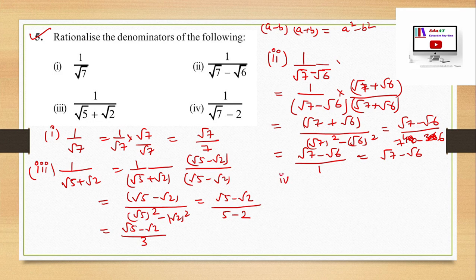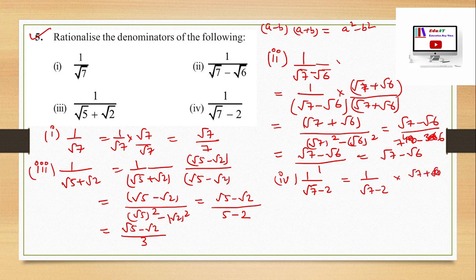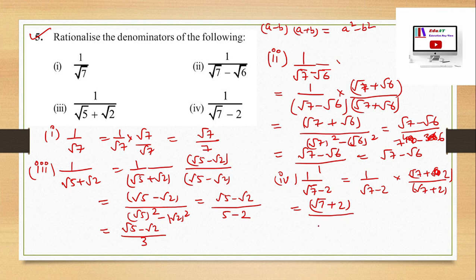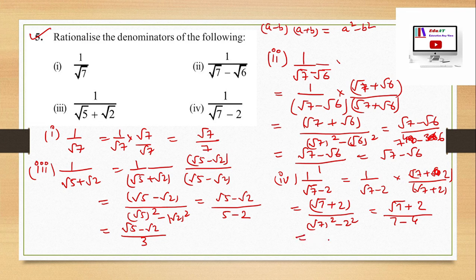Part 4: 1/(√7 − 2). Rationalize by multiplying by (√7 + 2). Using the identity a² − b², the denominator becomes (√7)² − 2² = 7 − 4 = 3. So the final answer is (√7 + 2)/3.